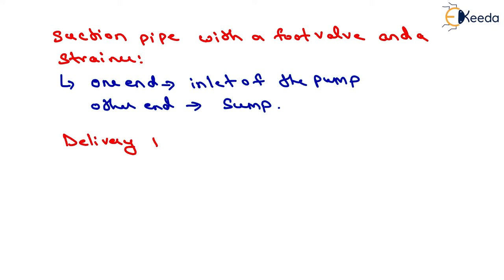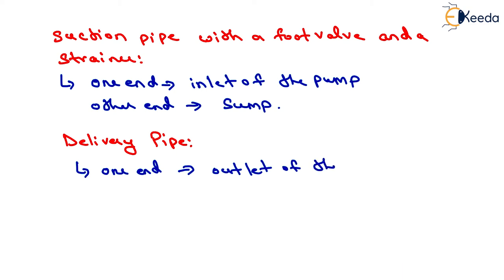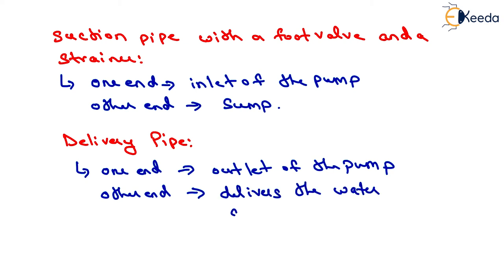The next main part is the delivery pipe. A pipe whose one end is connected to the outlet of the pump and the other end delivers the water at a required height is known as a delivery pipe. That is all about the main parts of a centrifugal pump.